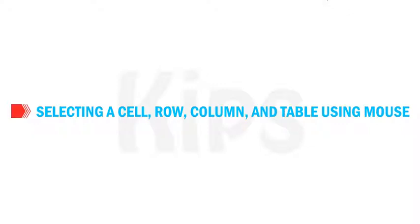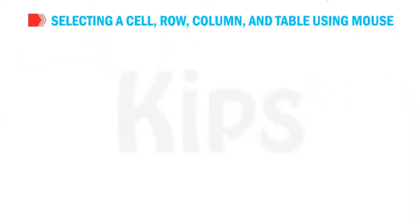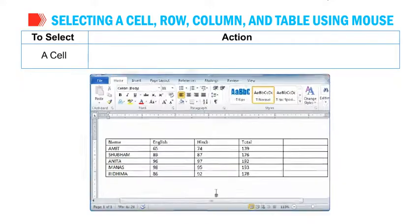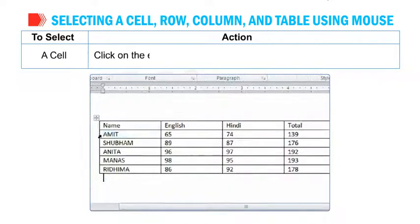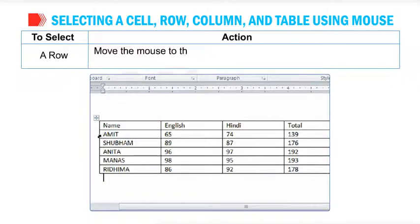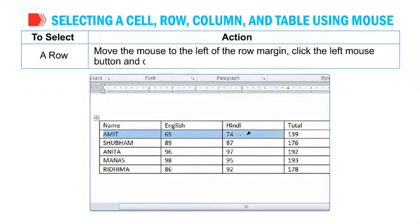To select a cell, row, column, and table using the mouse: to select a cell, click on the edge of the cell. To select a row, move the mouse to the left of the row margin and click the left mouse button.